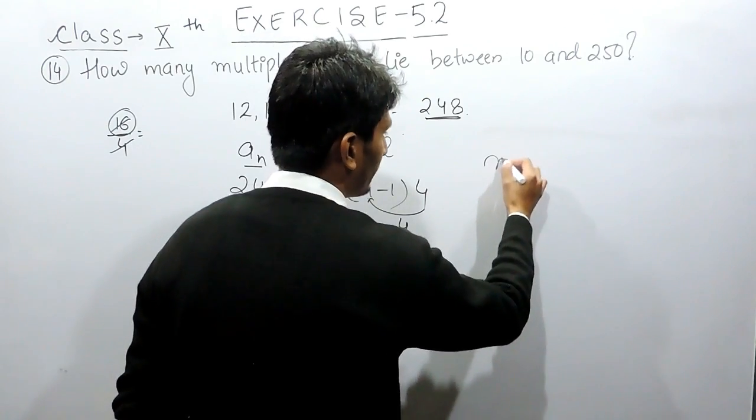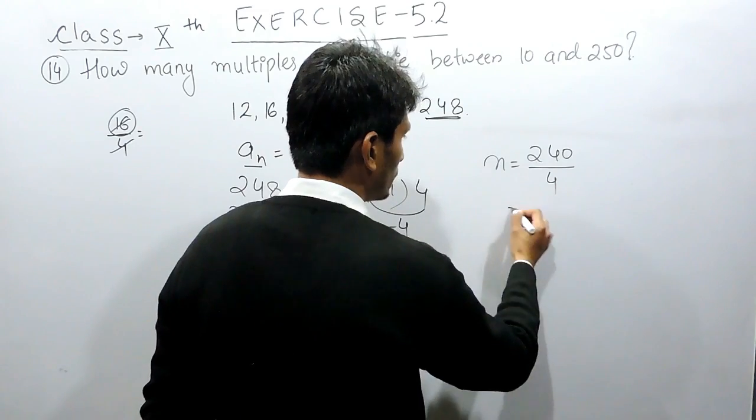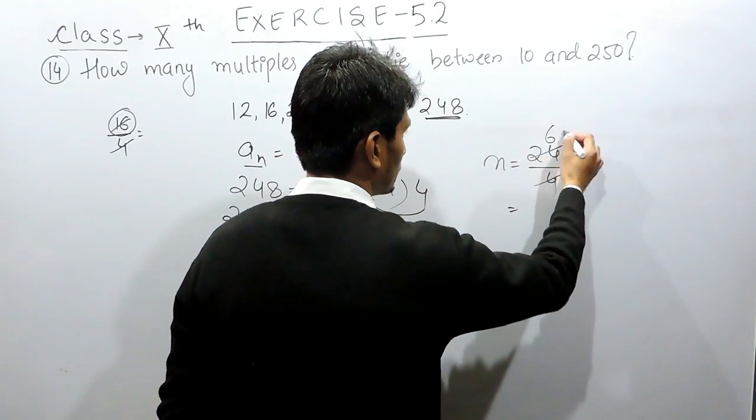Now if you want to find the value of n, that would be equal to 240 divided by 4. So this can be cancelled 60 times.